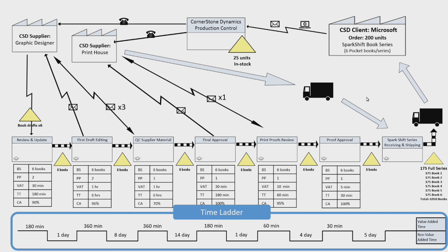The last thing you need to look at is the time ladder — how long it actually takes to go through each process step. The top portion is value-added time. For example, 180 minutes is value-added in the first step, then it takes one day before getting to first-draft editing, which is 360 minutes, then eight days before QC supplier material. In total, the book went through 19.5 hours of actual process time, but the wait time between steps was 33 days.